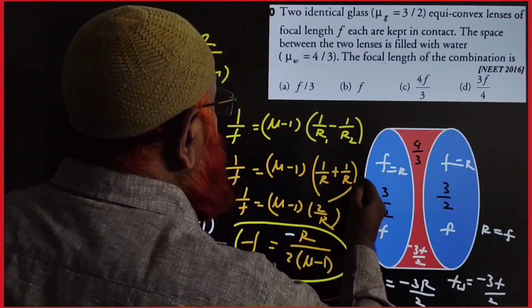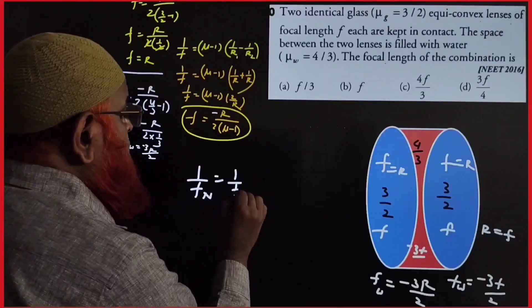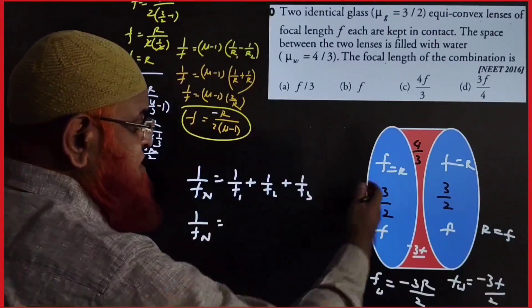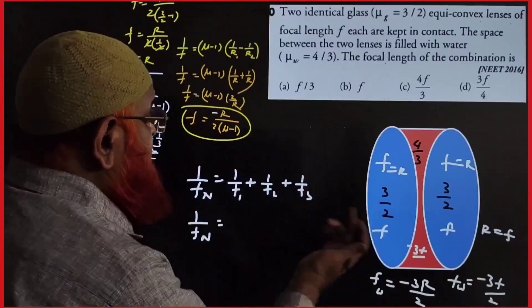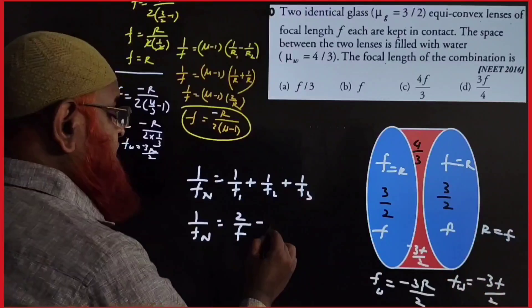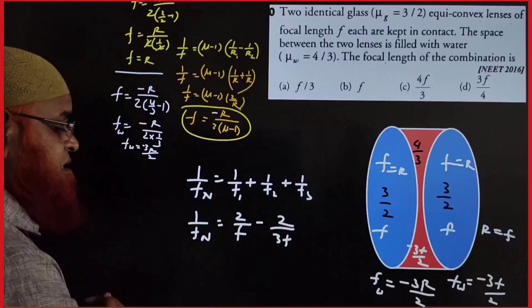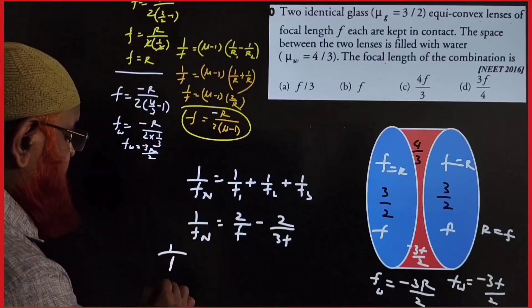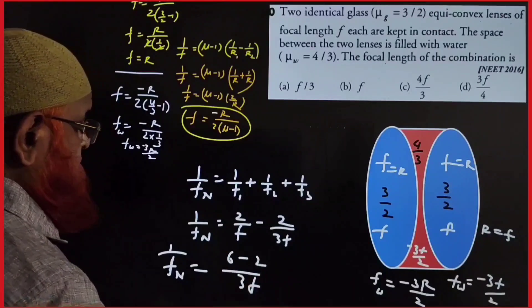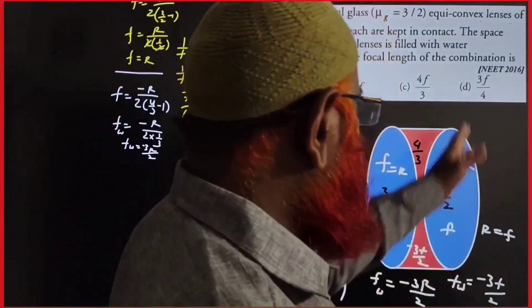Using the resultant focal length formula: 1/f_net = 1/f₁ + 1/f₂ + 1/f₃. Since f₁ = f₃ = f, this becomes 2/f − 2/(3f). Taking LCM of 3f: (6 − 2)/(3f) = 4/(3f). Therefore f_net = 3f/4.